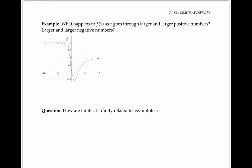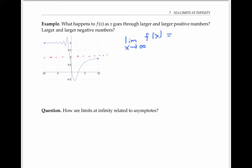In our first example, what happens to our function f of x as x goes through larger and larger positive numbers? As x gets larger and larger, f of x is getting closer and closer to the value of one. We can write this as the limit as x goes to infinity of f of x equals one. Here, x goes to infinity means that x is getting larger and larger through positive values.